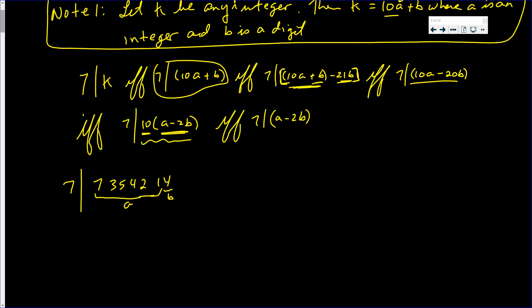Well, 7 goes into this number if and only if 7 goes into a minus 2b. So I take away 8. I apologize, I keep forgetting that 1 at the end.